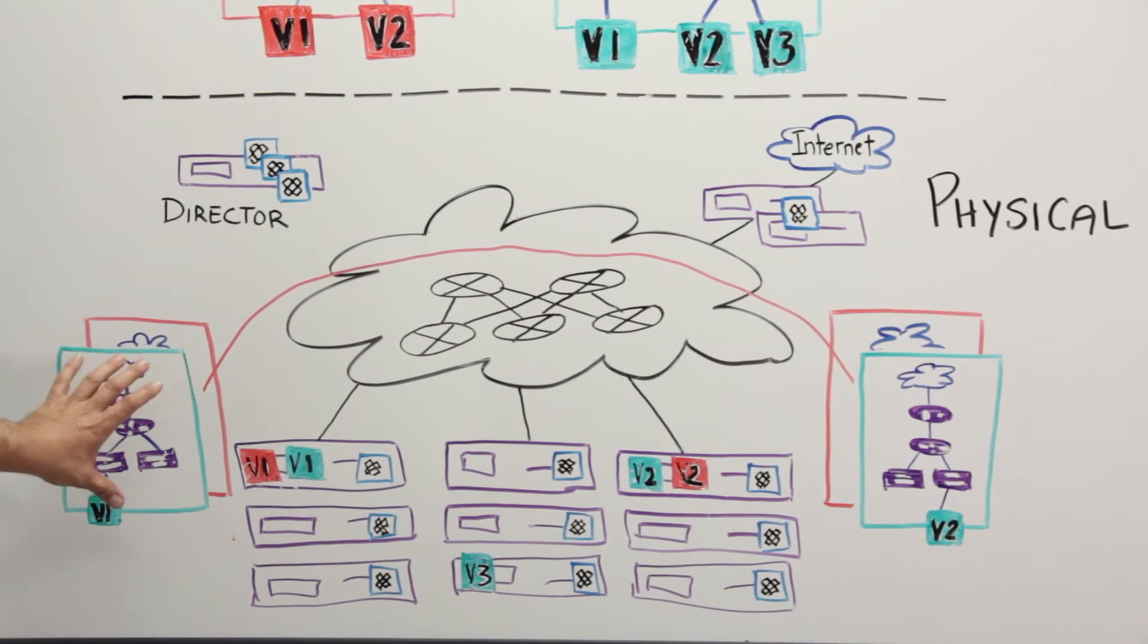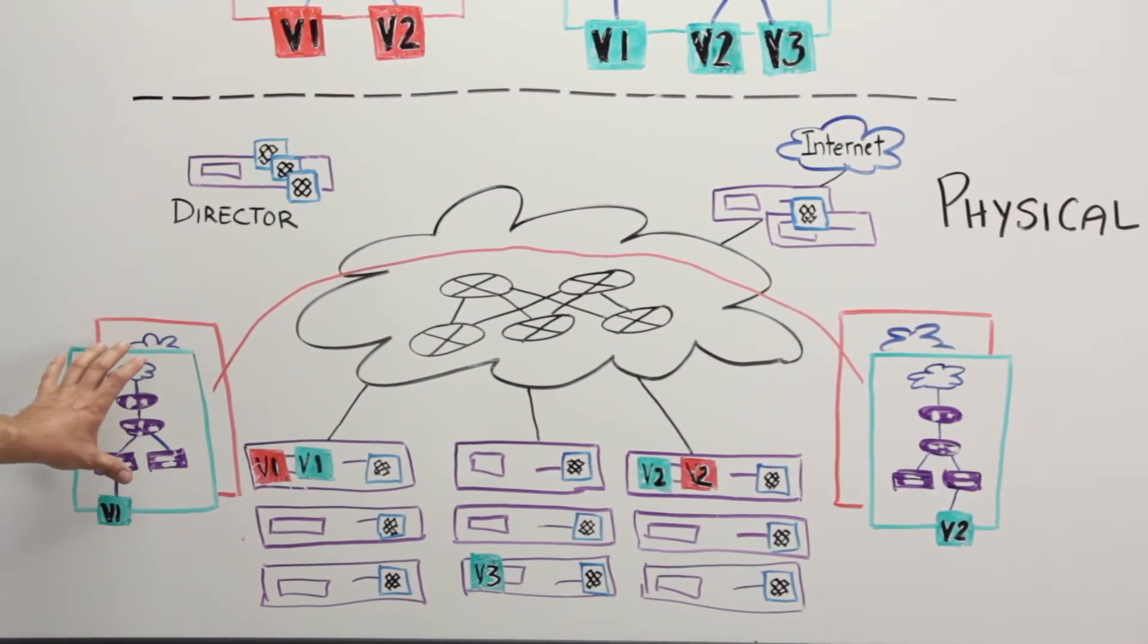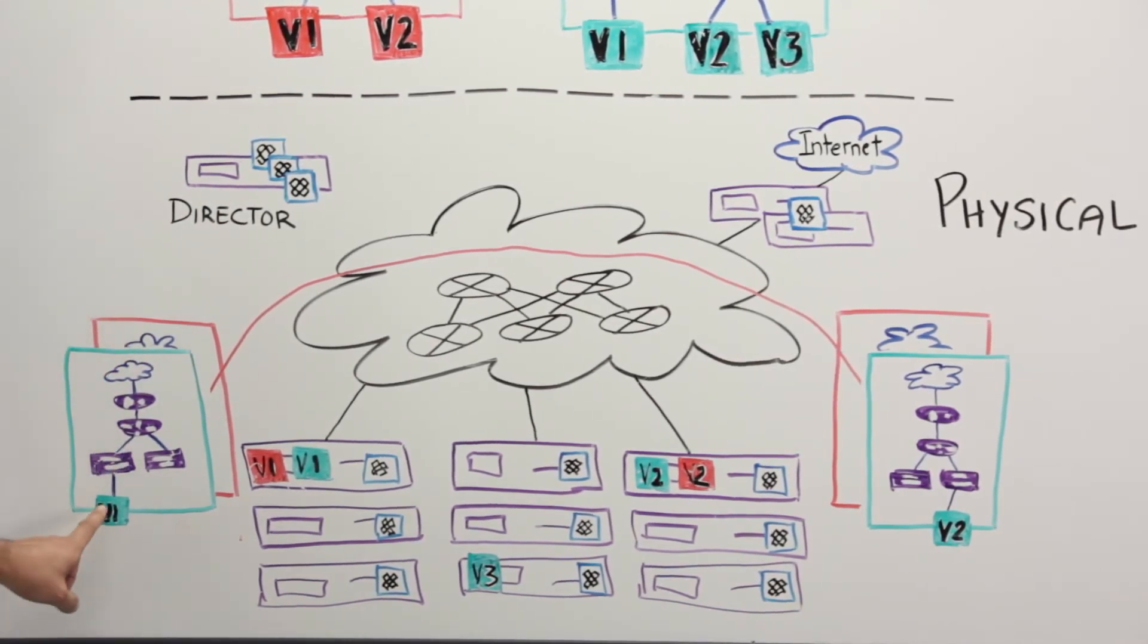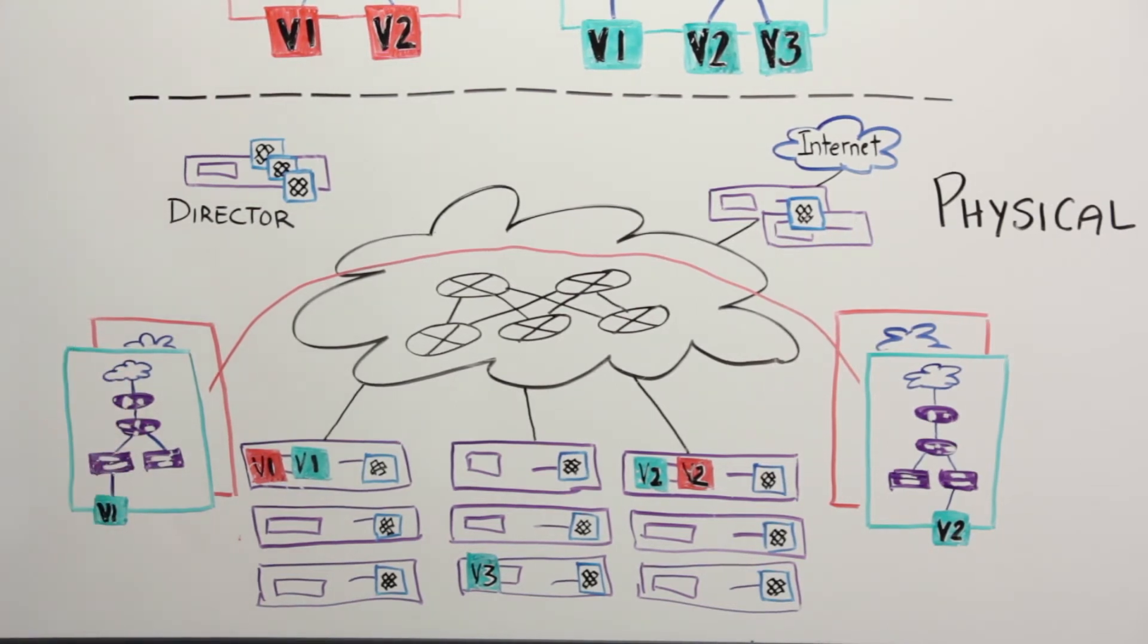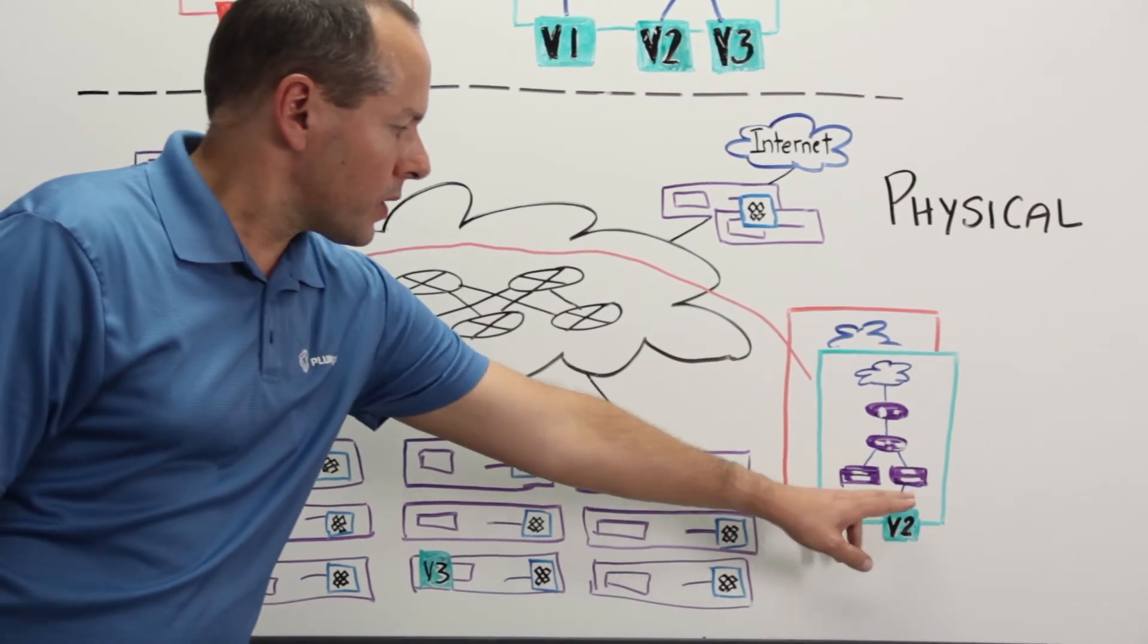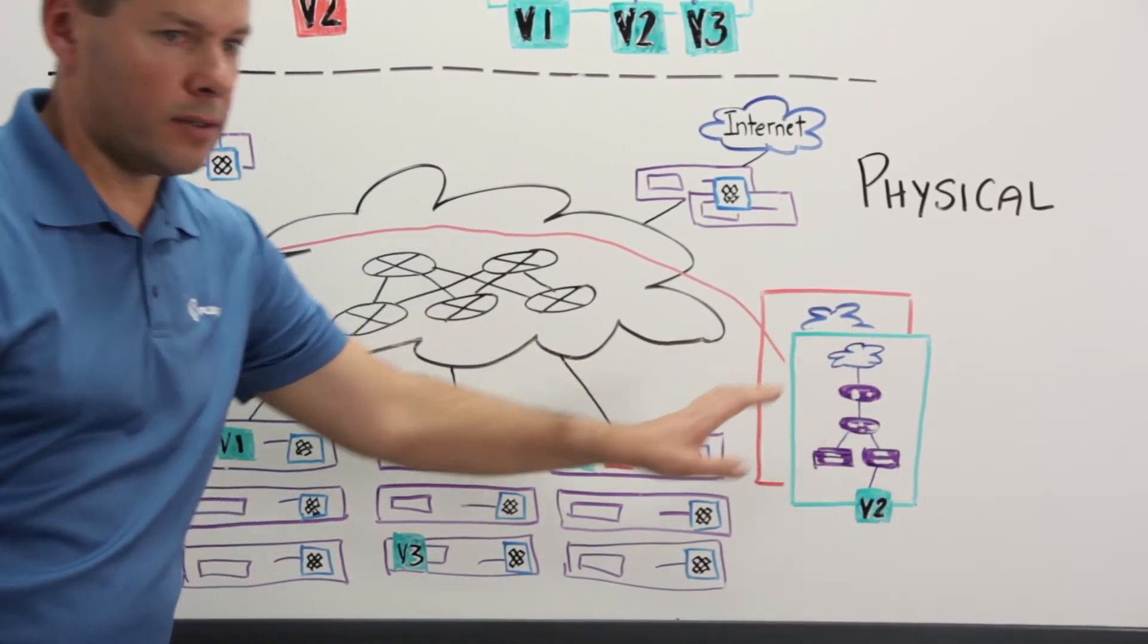And we see this with virtual machine 1 connected to its bridge, router, bridge, with external connectivity. And the same goes for virtual machine 2 on its bridge, router, and external connectivity.